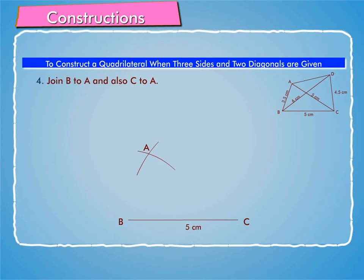Step 4: Join B to A and also C to A. Step 5: With C as center and radius 4.5 cm, draw an arc.